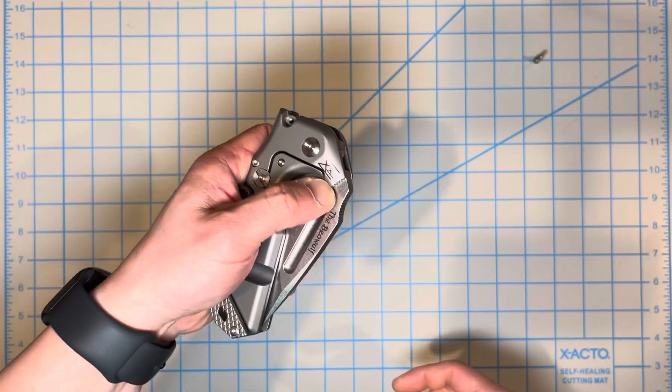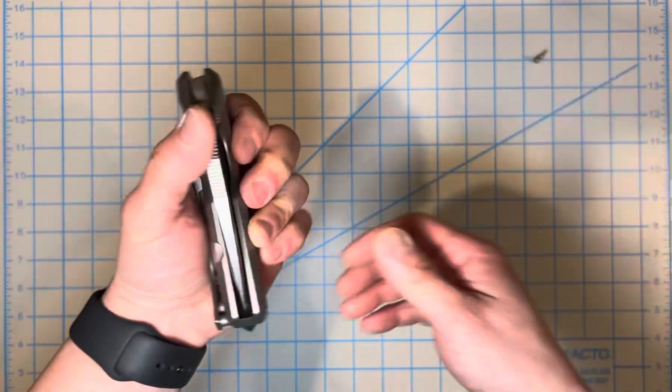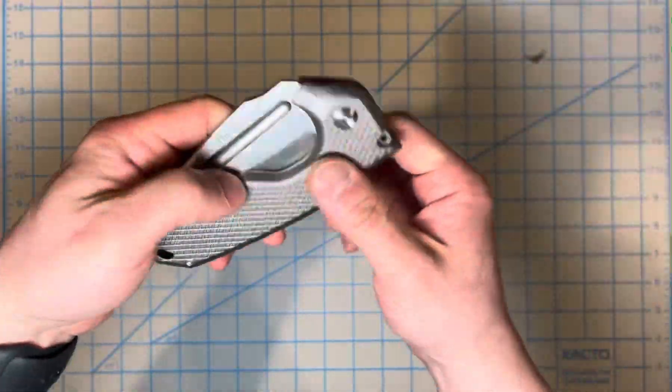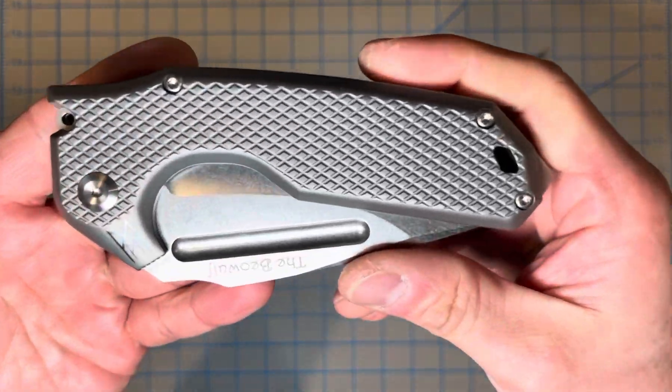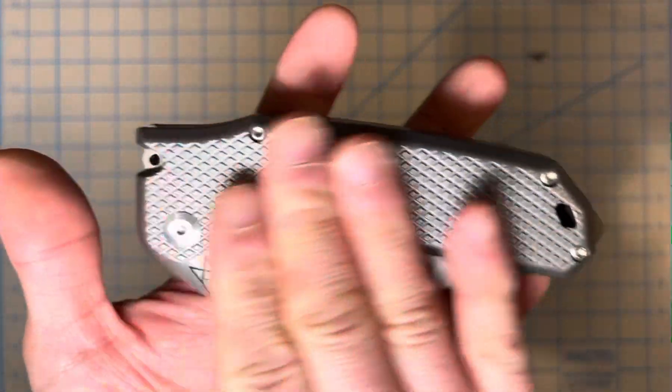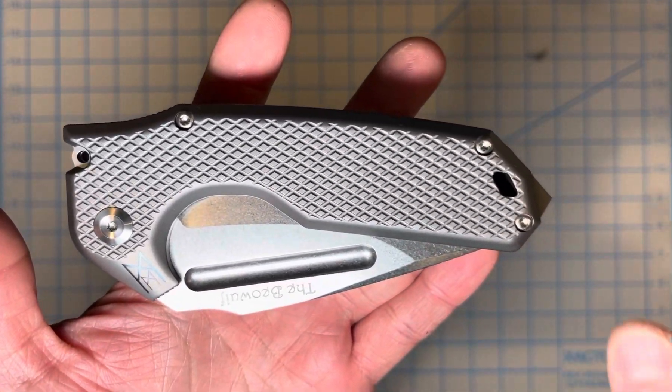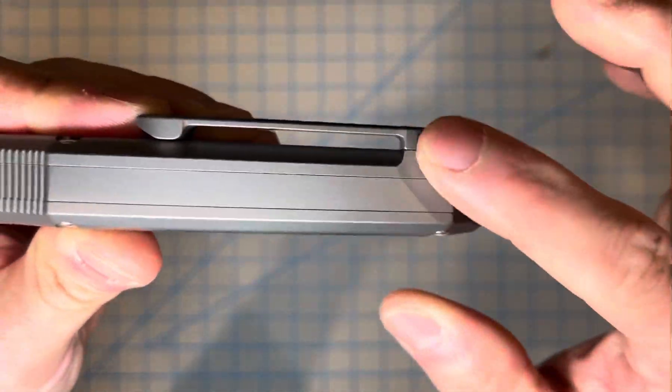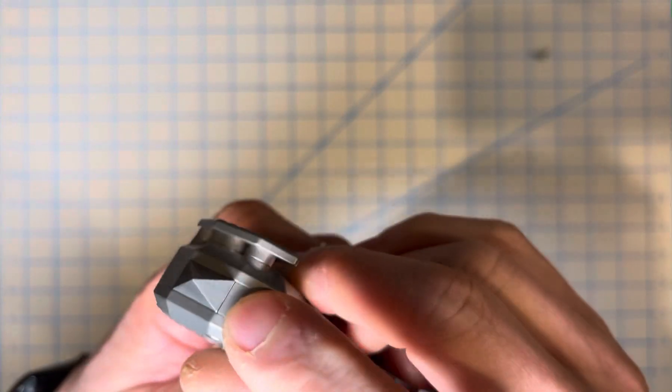I'm not very good at flicking this thing so I'm not even gonna try. Let me see if actually, you know what I'll give it a try. I can't flick it, spider flick it, or flick it with my thumb. Some people can, I just can't. Basically it's a titanium scale with diamond pattern texture and full back spacer with a tungsten glass breaker.